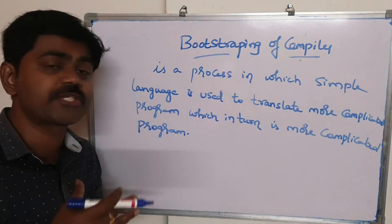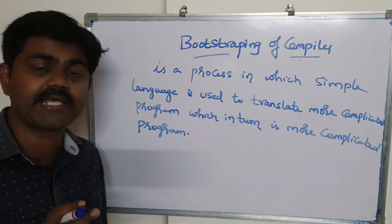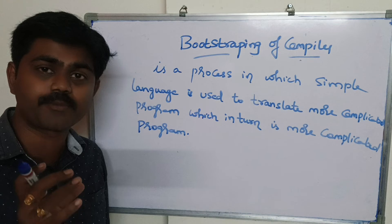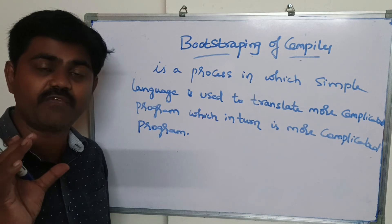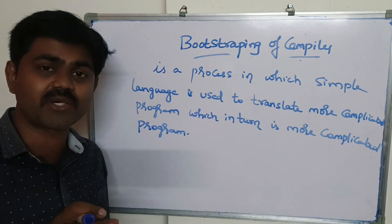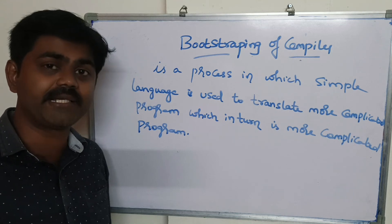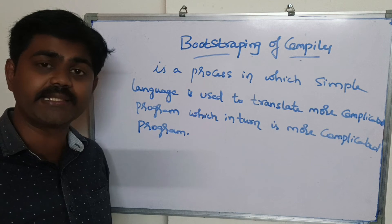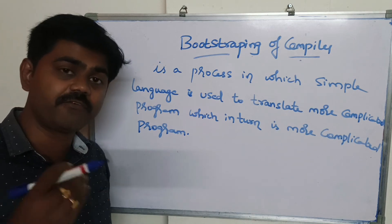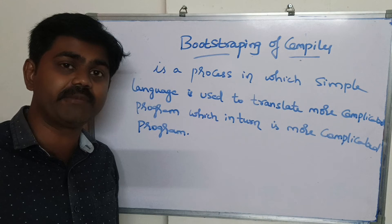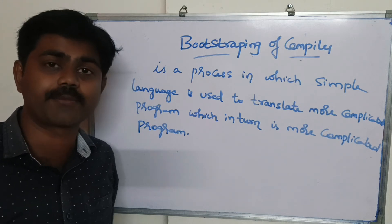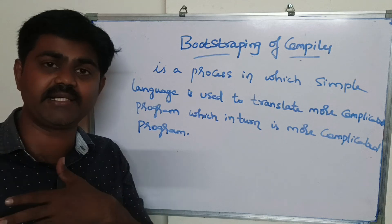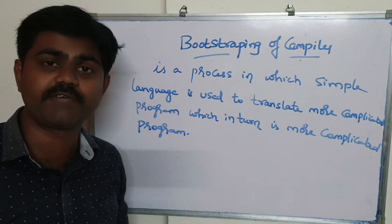What exactly happens is: whenever we combine two compilers we get a complicated program called a cross compiler. When we use that cross compiler and combine it with another compiler, we get an even more complicated program. If we combine that result with yet another compiler, this process will never end — and this is called bootstrapping of a compiler.